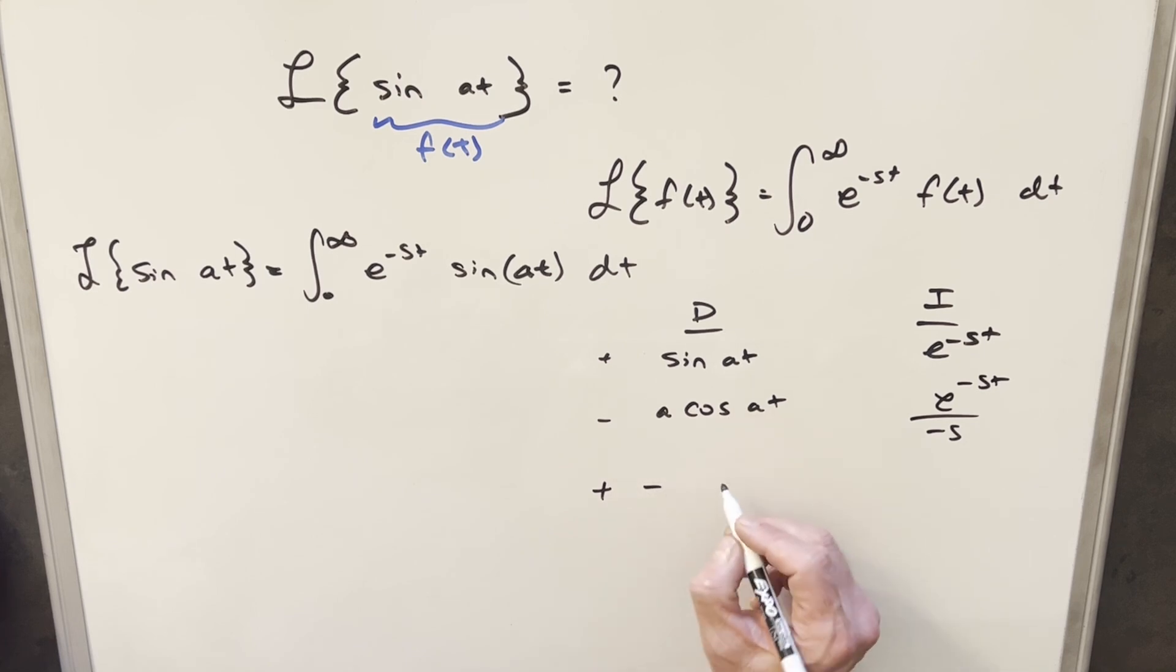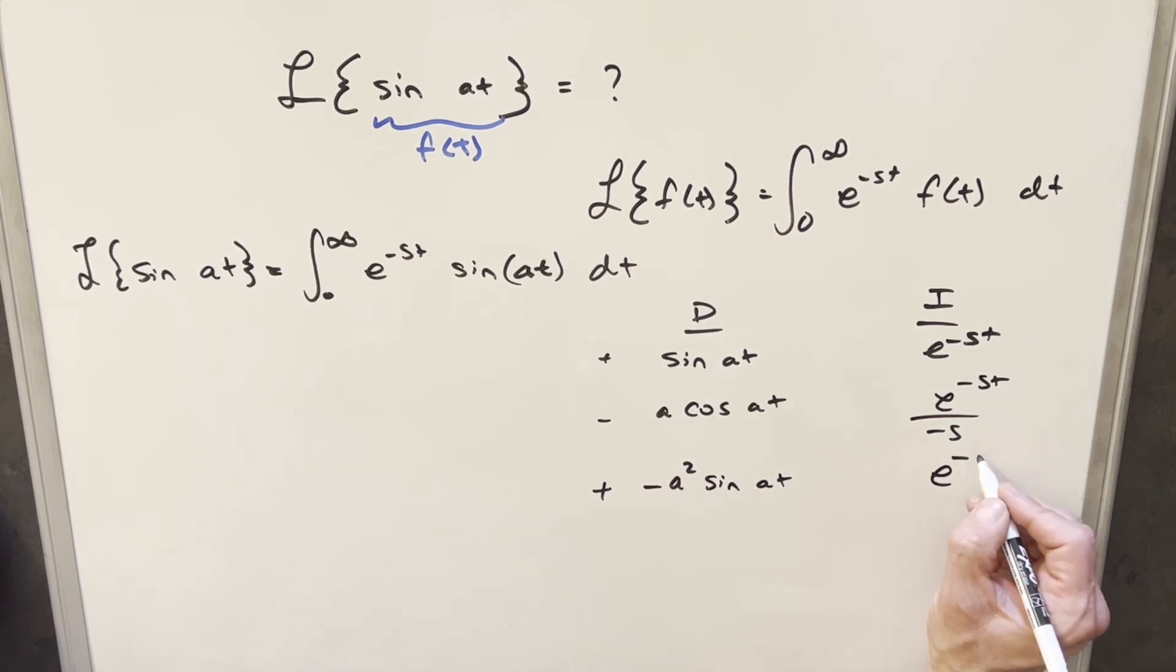This is going to give me a minus sine, sine at. We pull out another a, we're going to have an a squared in front. This one, we integrate this, we're going to have e to the minus st. We pull out another minus s, we get just s squared in the denominator here.